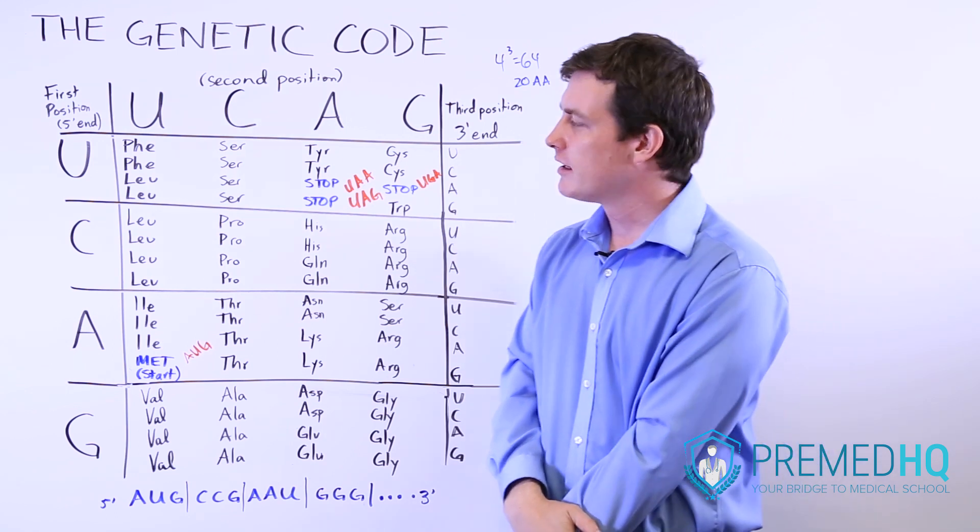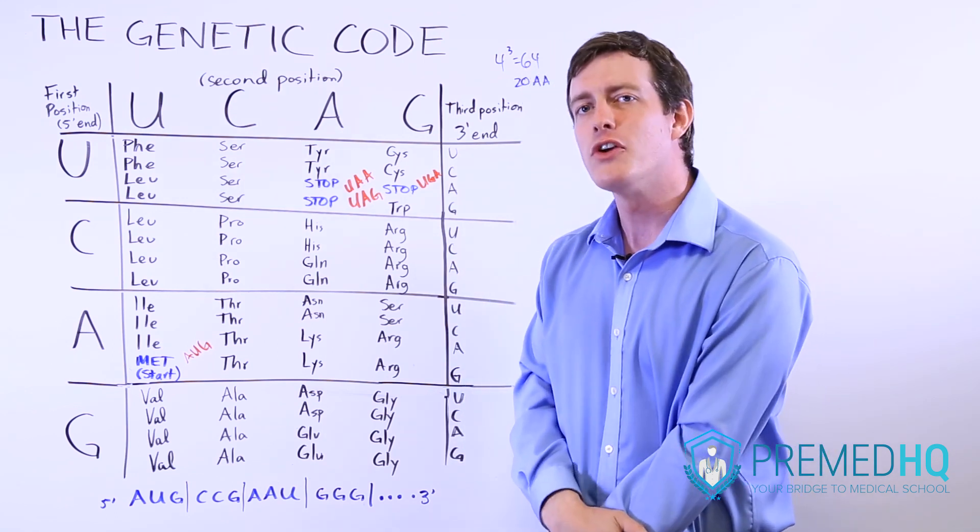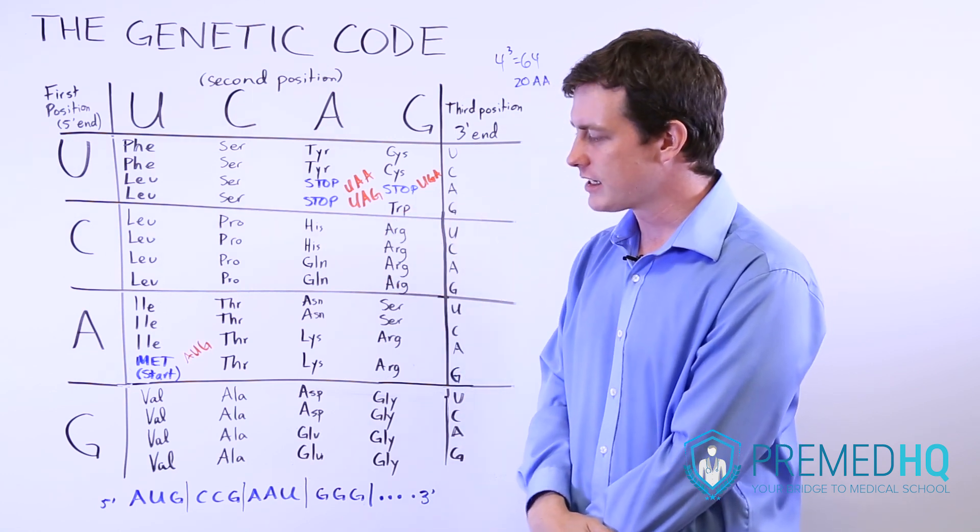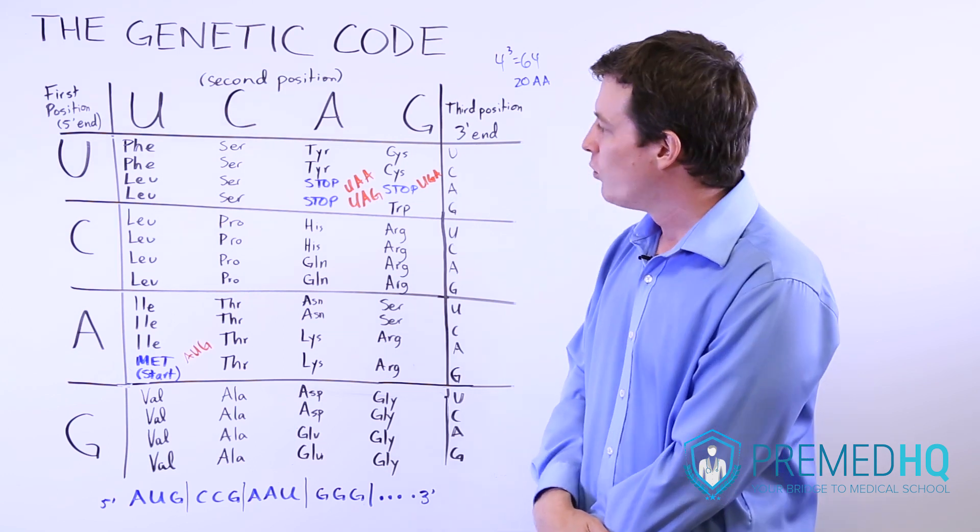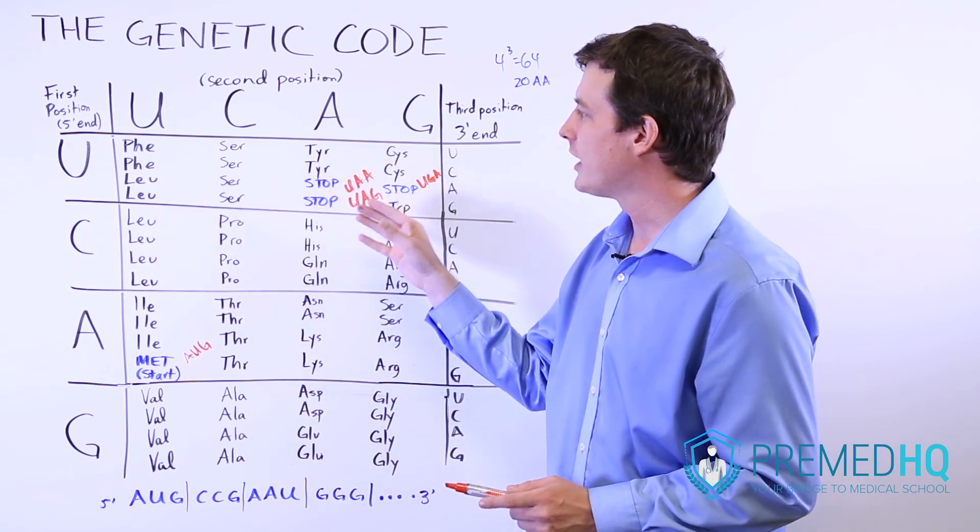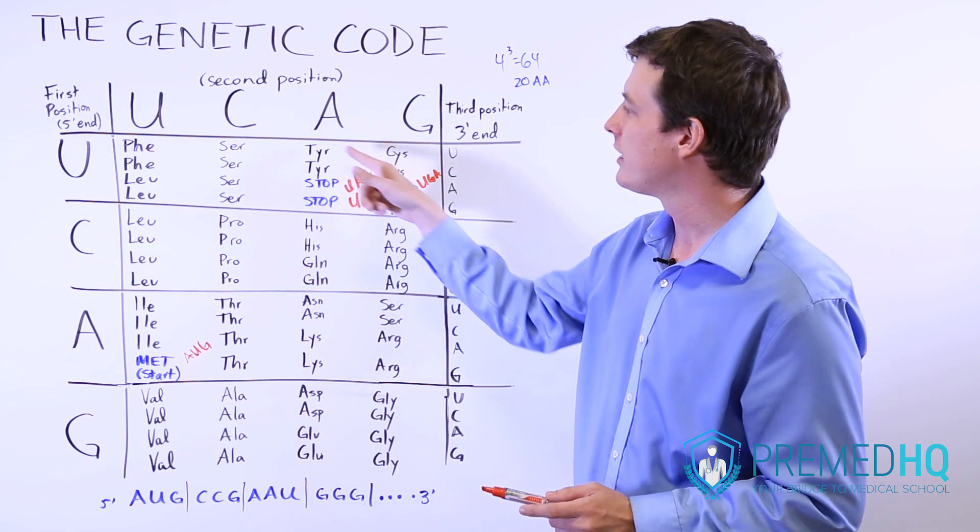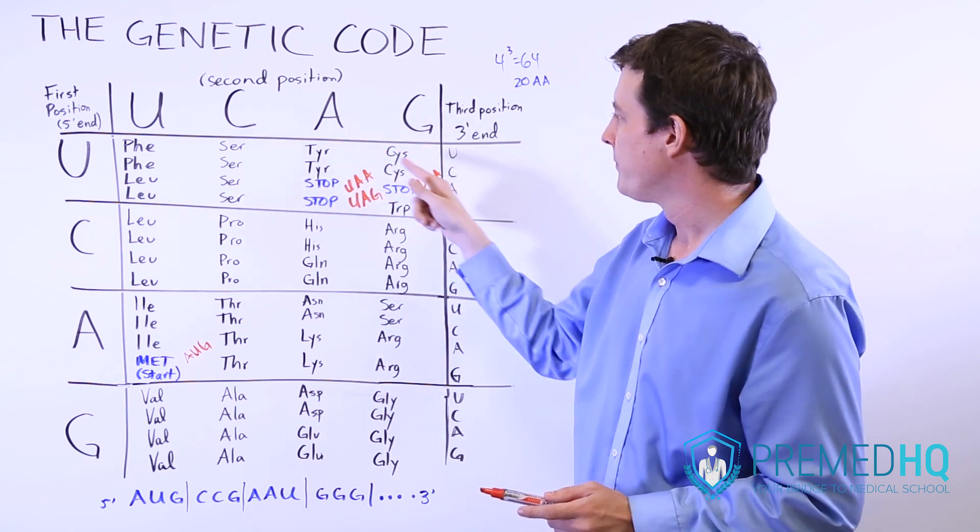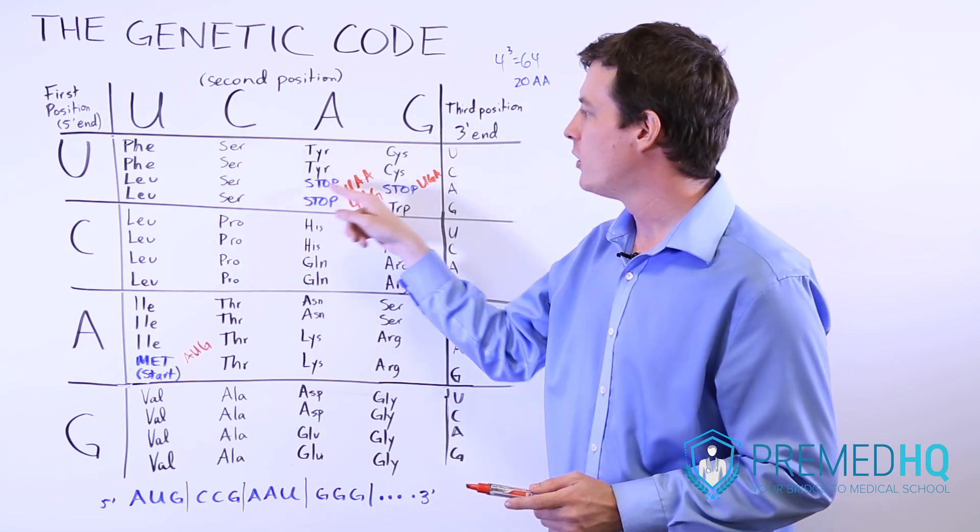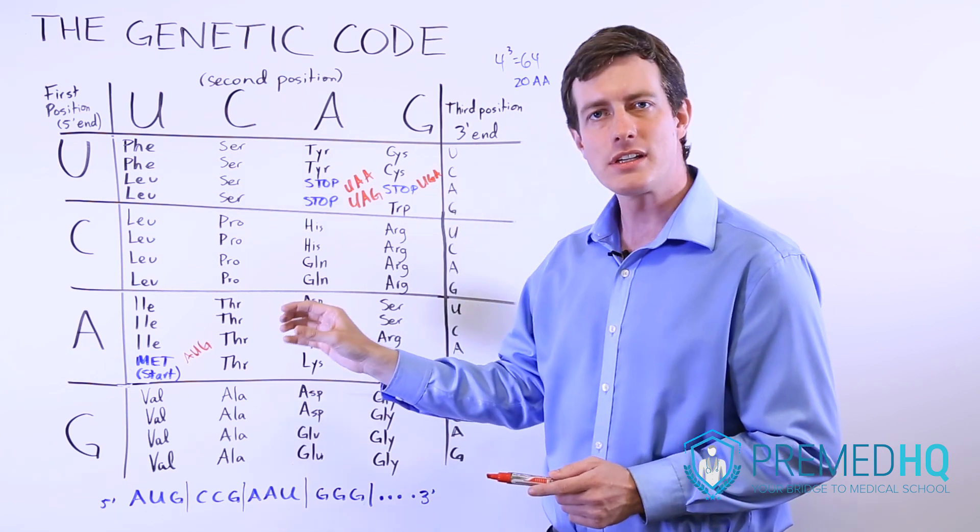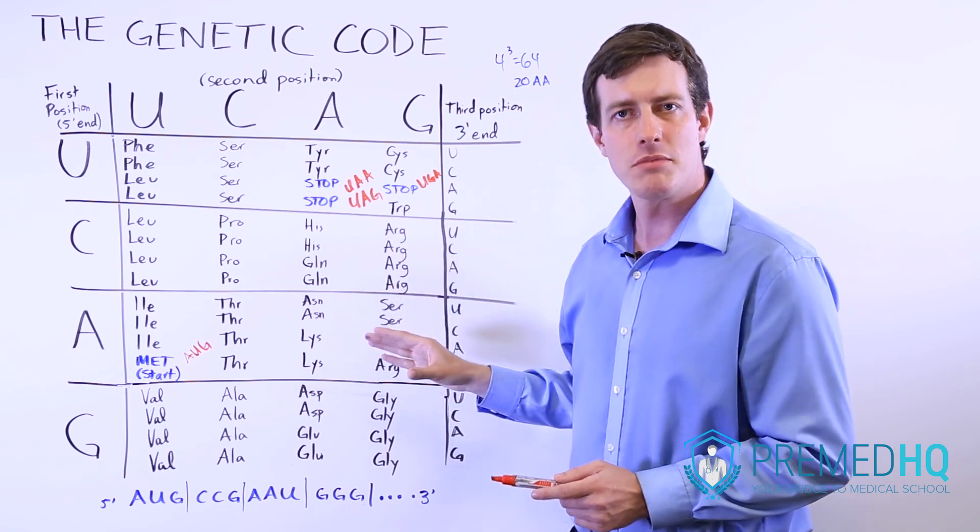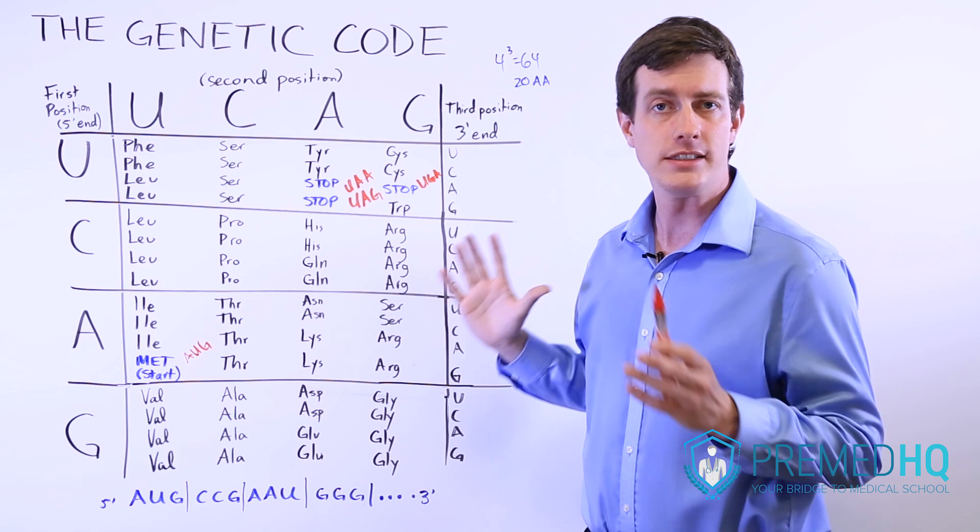Then we can have something called a nonsense mutation. And this is a very serious one. This is referred to as a deleterious mutation because it significantly alters the structure of the protein. What that essentially means is that nonsense means you have encoded now for a premature stop codon. So let's say we had a tyrosine here, UAC. And instead of UAC, it now became a UAA. That would now encode a stop codon where there was previously a tyrosine. And everything downstream of that would not be translated by the ribosome.